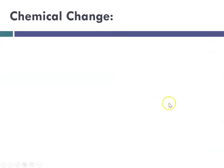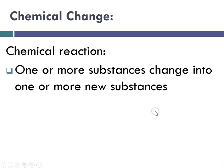So we begin by talking about a chemical change, which is also known as a chemical reaction, and that is when one or more substances change into one or more new substances. So we can say that reactants turn into products.